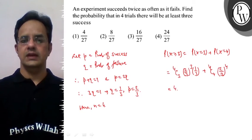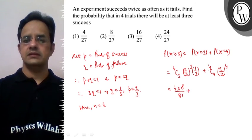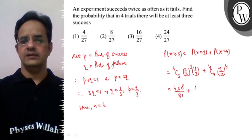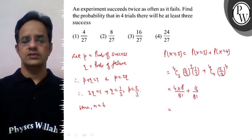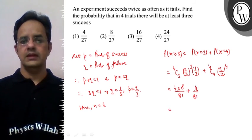Now 4C3 is 4 and it is 8 upon 81. 4C4 is 1 and we have 16 upon 81. So it is 32 plus 16.